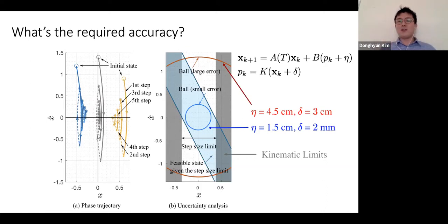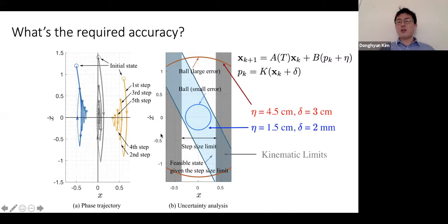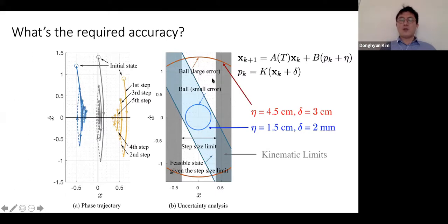By continuously taking steps the robot can stop, but you cannot take a large enough step if your state is far out, because robot kinematics is limited. This gray area represents those kinematics — you cannot take a step larger than about 0.35 to 0.4 meters, so 40 centimeters. The state that can be controlled given this kinematic limit is the blue region.